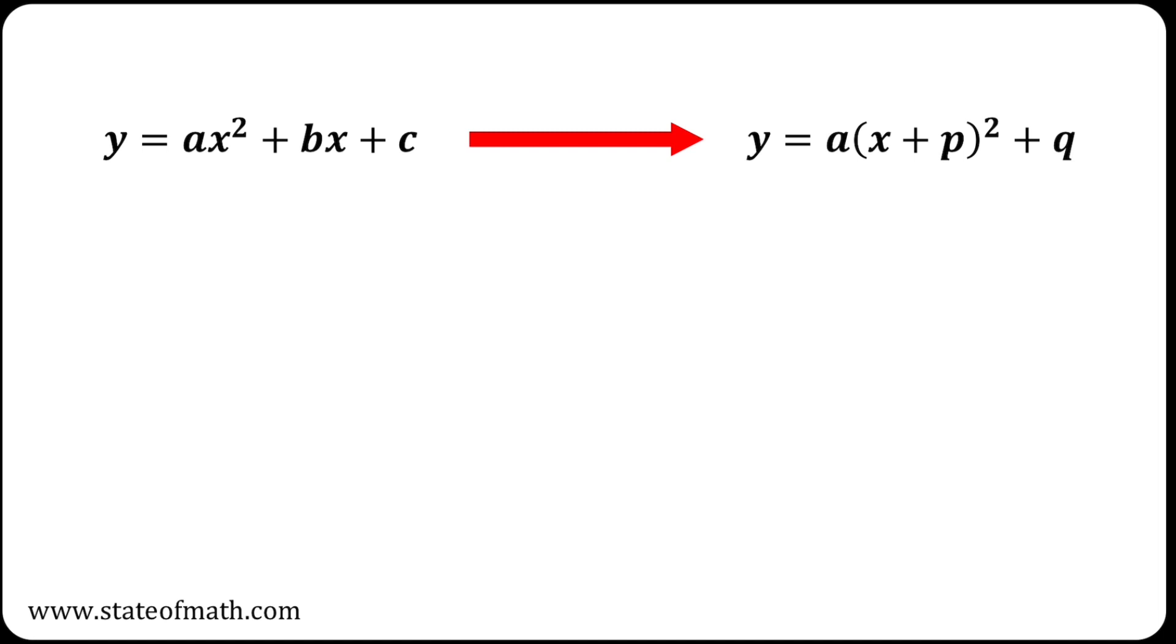Once you complete the square, so you put a function in this form, then to find the x coordinate of the turning point, just take the bracket and set it equal to 0. So in this case x plus p equals 0, which implies that x equals minus p and that's the x coordinate of the turning point.